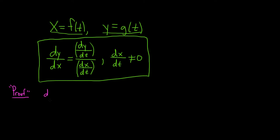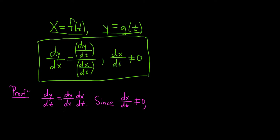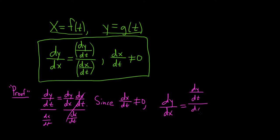Notice that dy/dt equals dy/dx times dx/dt. You can do that via the chain rule — the derivative of y with respect to t is the derivative of y with respect to x times the derivative of x with respect to t. The dx cancels — it's just a trick. Since dx/dt is not equal to 0, we can divide both sides by dx/dt.